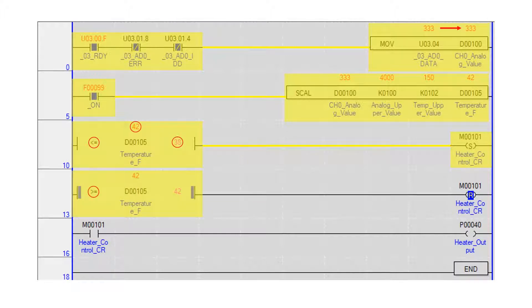Using a greater than or equal to compare instruction, the current temperature is compared to a set point of 42. If the temperature is at or above 42 degrees, the internal bit heater control CR is reset. The heater control CR bit turns the discrete output heater output on or off.